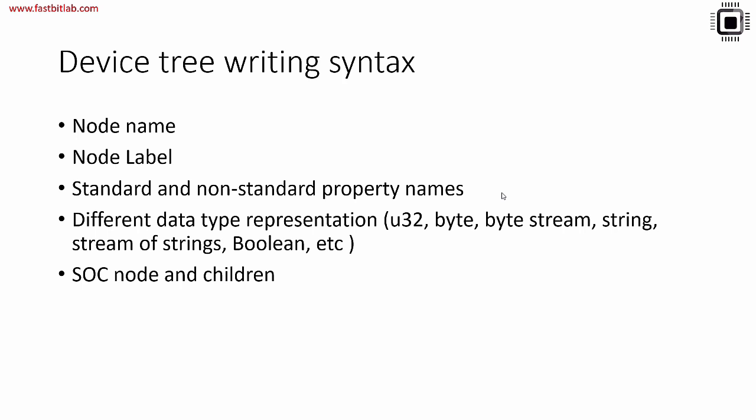Before writing a device tree node for your project, you must understand device tree writing syntax. All these syntaxes are explained by the device tree specifications. There is a certain syntax to write the node name and node label, and while writing properties you must follow certain rules. There are standard and non-standard property names, and different data type representations — a property could be an integer, a string, or a boolean. The specification explains the different data type representations.